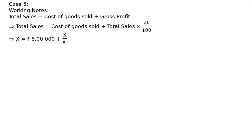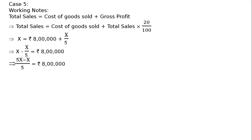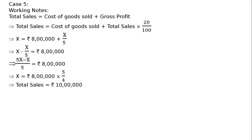Let X equal total sales. Then X is equal to Rs. 8,00,000 plus X by 5. This implies X minus X by 5 is equal to Rs. 8,00,000, which gives 4X by 5 equals Rs. 8,00,000. Solving: X is equal to Rs. 8,00,000 multiplied by 5 by 4, implying total sales is equal to Rs. 10,00,000. So net revenue from operations is Rs. 10 lakhs.